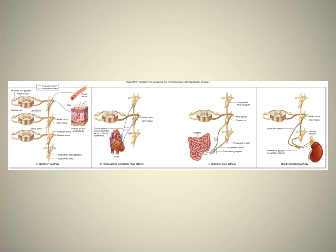In this case the preganglionic axon is a little longer than in the spinal nerve pathway. Finally, the special case — the adrenal medulla pathway — where there's only one axon, a preganglionic axon. It goes straight through the sympathetic chain ganglion and through the collateral ganglion to innervate the postganglionic cell in the adrenal medulla. That cell doesn't have an axon; it just secretes epinephrine and norepinephrine.